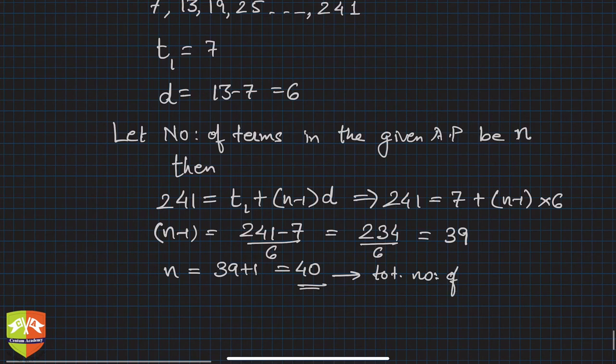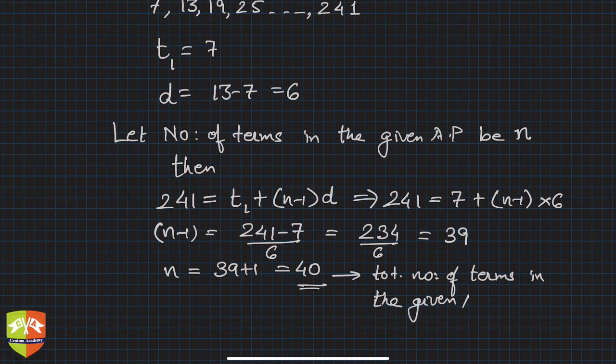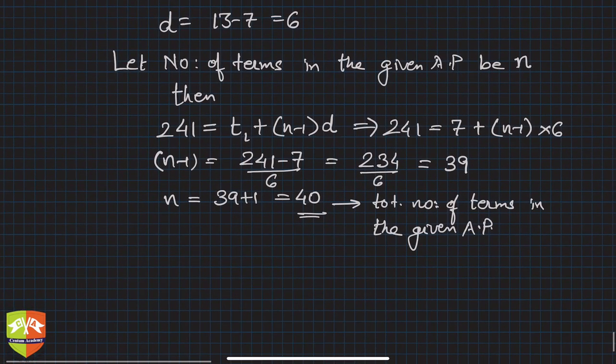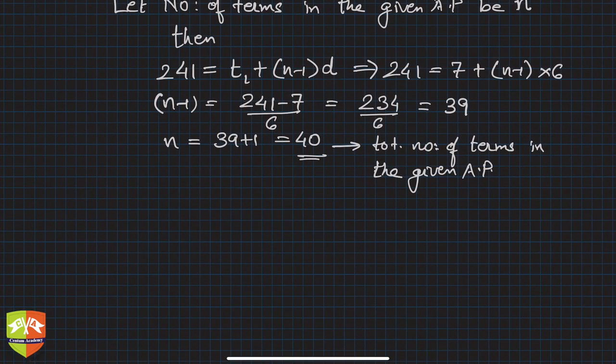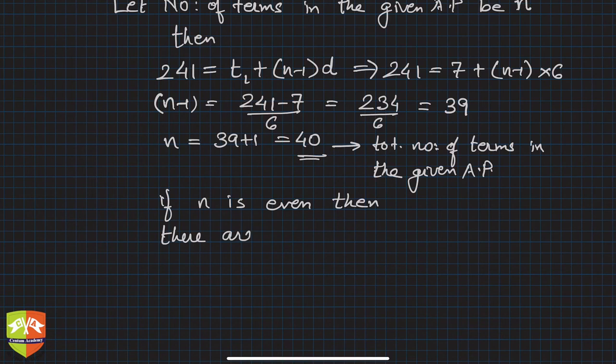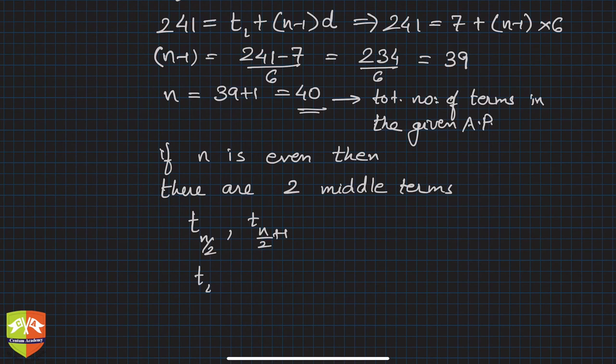Total number of terms in the given AP. Now you can find out the middle term. n is even, so if n is even, then there are two middle terms. They are located at t n upon 2 and t n upon 2 plus 1. So in this case, t 40 by 2 and t 40 by 2 plus 1, that is t 20 and t 21 are the middle terms.